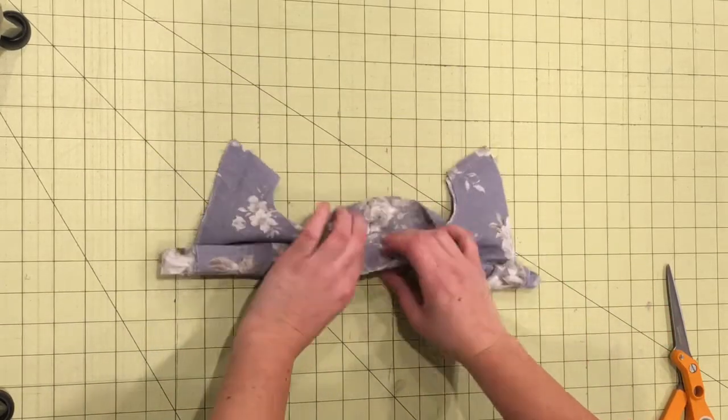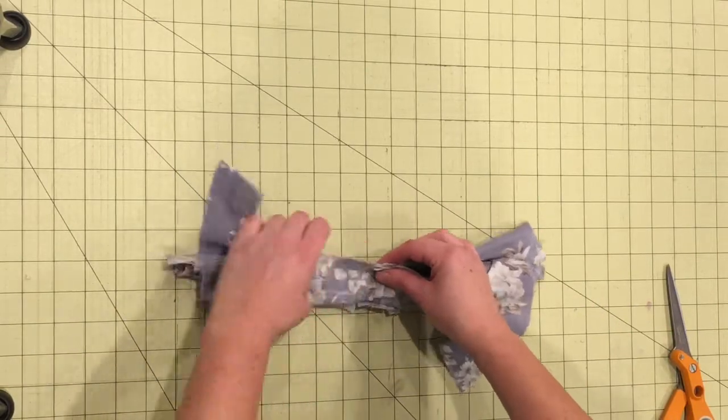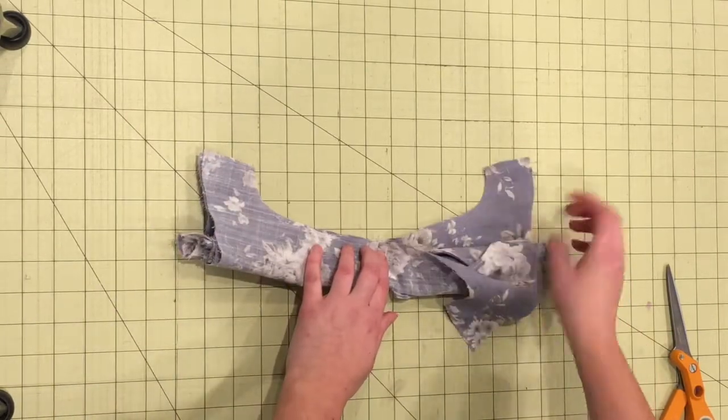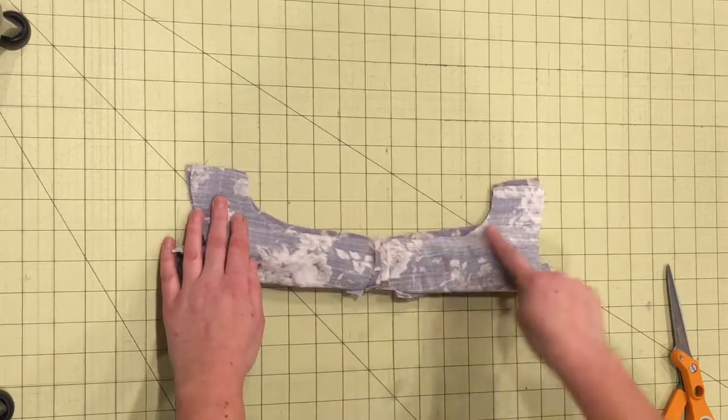Separate the shoulder and wrap it around the rolled bodice so that right sides match up together and sew from the underarm curve across the shoulder and down.